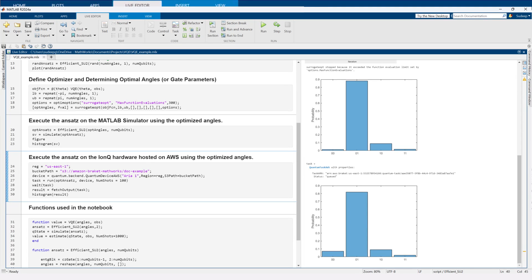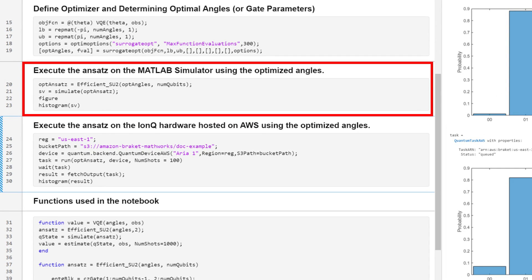Let's now extract the optimal set of values of the rotational gates of the ansatz which results in this minimum eigenvalue. Now we have the optimal values of rotational gates of the ansatz so let's run the circuit on the MATLAB simulator.